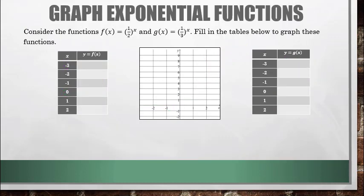Now let's consider some functions where our A value is less than 1, where we'll have decay functions. f of x equals 1/2 to the x, and g of x equals 1/3 to the x power. Looking at f of x: when x is negative 3, we get 1/2 to the negative 3 power. Whenever you have a negative exponent and a fraction, you can take the reciprocal of the fraction — the reciprocal of 1/2 is 2 — and make the exponent positive. So that's the same as 2 cubed, which is 8.